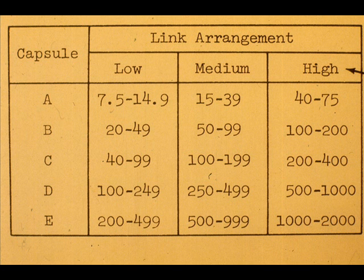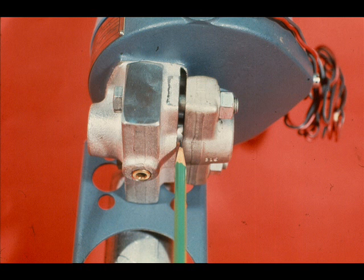This table designates the link selection for a given span for a particular capsule. This 0 to 50 PSIG transmitter contains a B capsule. We have a request to change the range to 0 to 200 PSIG.